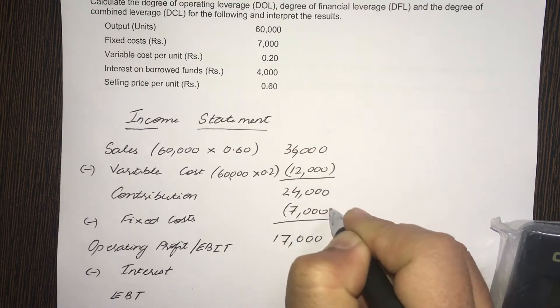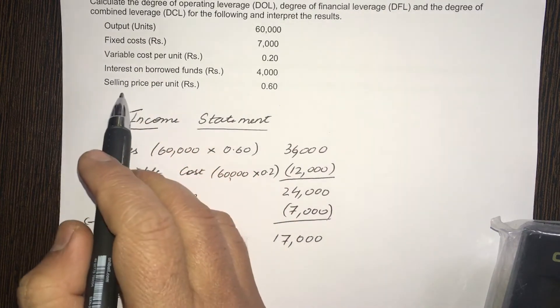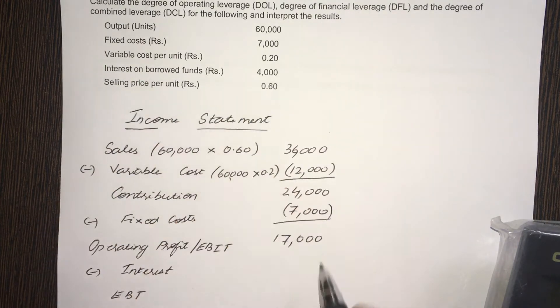So, your EBIT is 17,000 minus interest on borrowed funds. Interest is given, 4,000. So, finally, your EBT is 13,000.